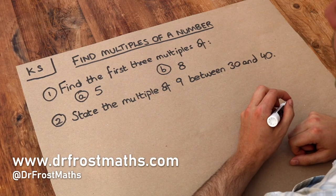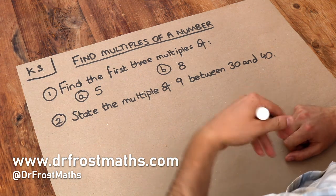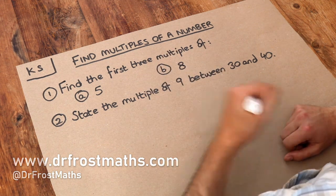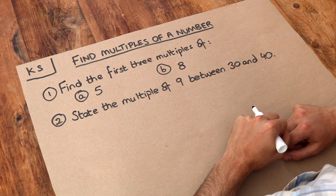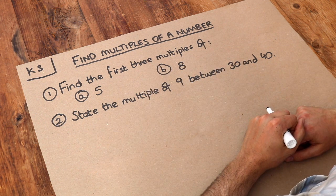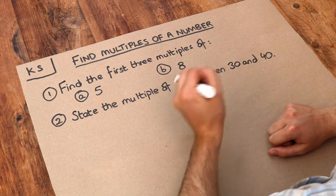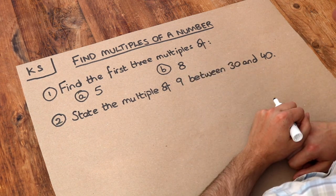Hello and welcome to this Dr Frost Maths key skill video on finding multiples of a number. We use the word multiple in English when we have more than one lot of something. If I said I had multiple bunches of grapes, that means I have more than one lot of grapes. If I had multiple cars, that means I have more than one car.